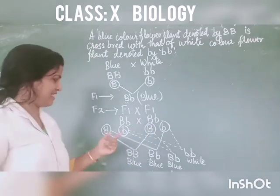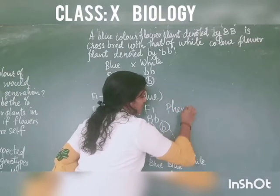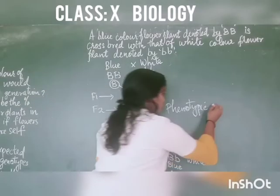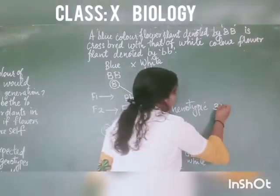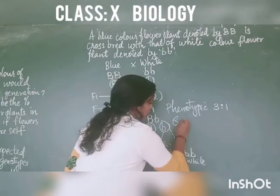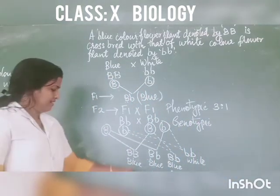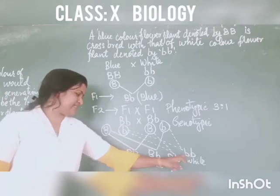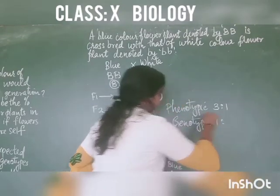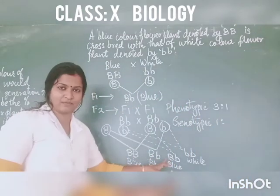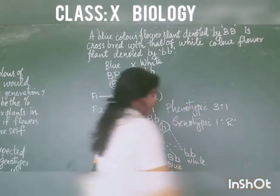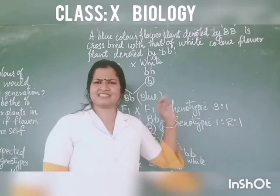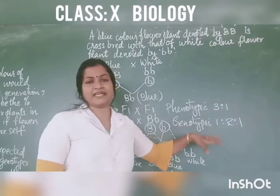This is the result of the F2 generation. We can determine the genotypic and phenotypic ratios. The phenotypic ratio: how many blue plants are there? 1, 2, 3 — so 3 blue and 1 white, giving a ratio of 3:1. The genotypic ratio: capital BB — 1; capital B small b — 2; small b small b — 1. So the genotypic ratio is 1:2:1. Every monohybrid cross has the same phenotypic and genotypic ratios.